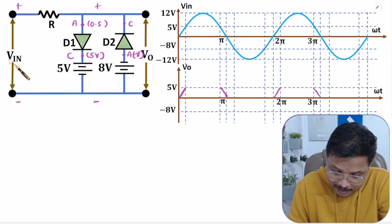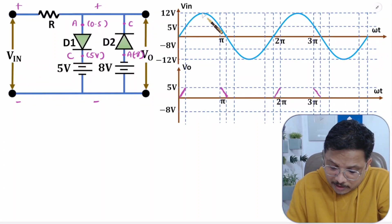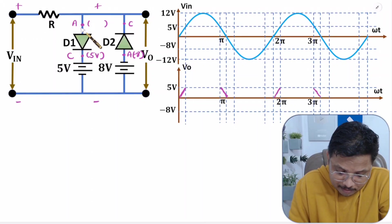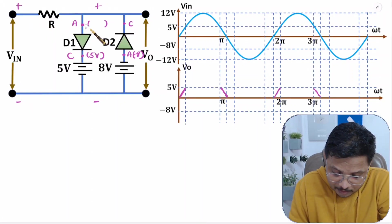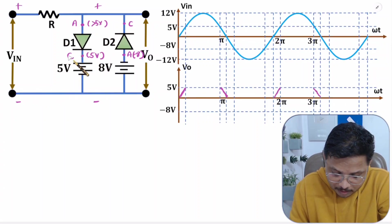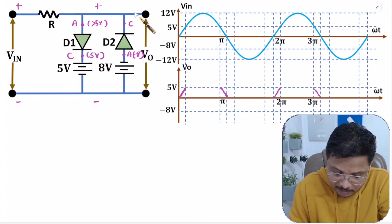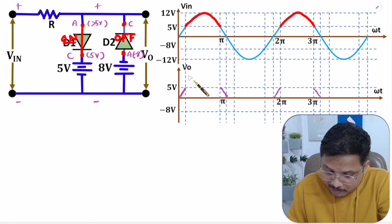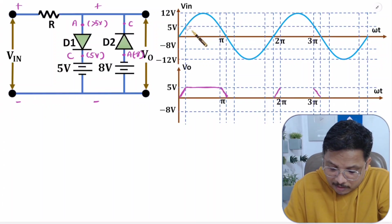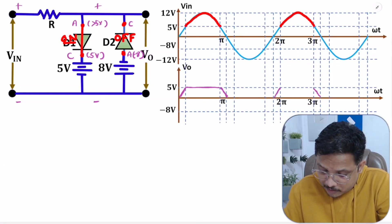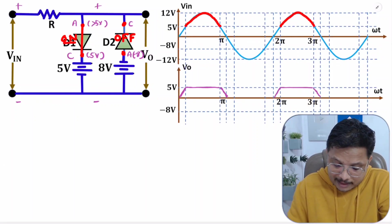Now, what will happen as V_in is greater than 5V — that is, 5 to 12V in the positive half? During this positive half cycle, anode is having voltage greater than 5V, so anode is positive with respect to cathode for D1, and D2 is in reverse bias. So D1 is on and D2 is off. As D1 is on, output will be the 5V battery. So output will be 5V during the 5 to 12V variation in the positive half cycle.